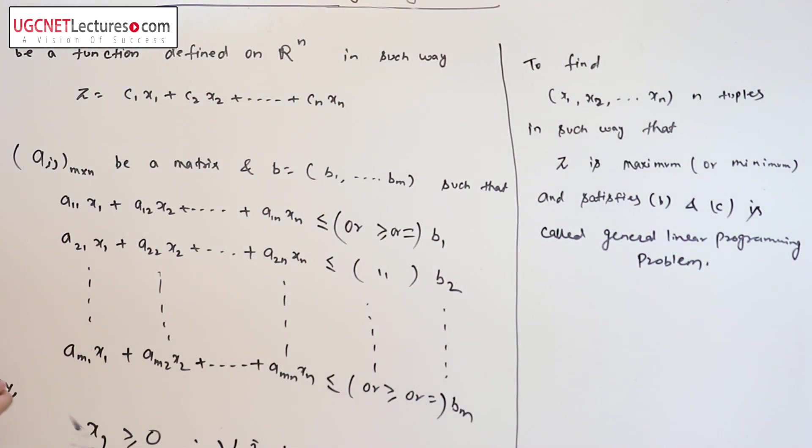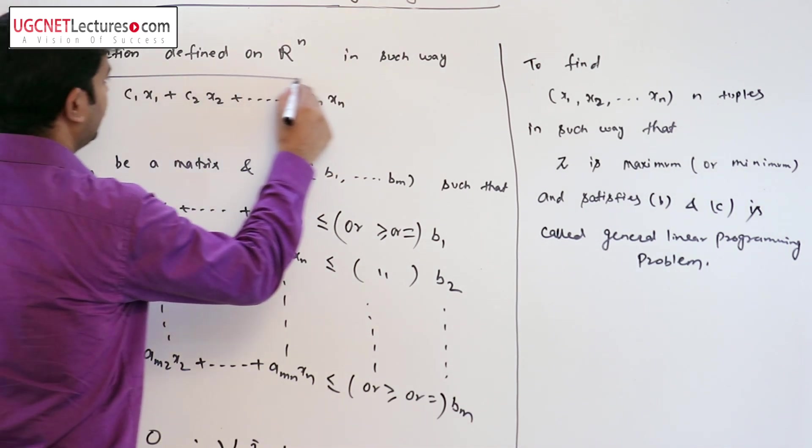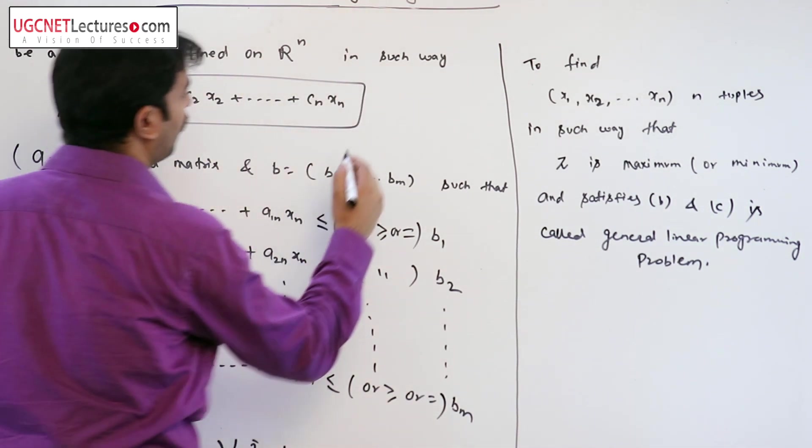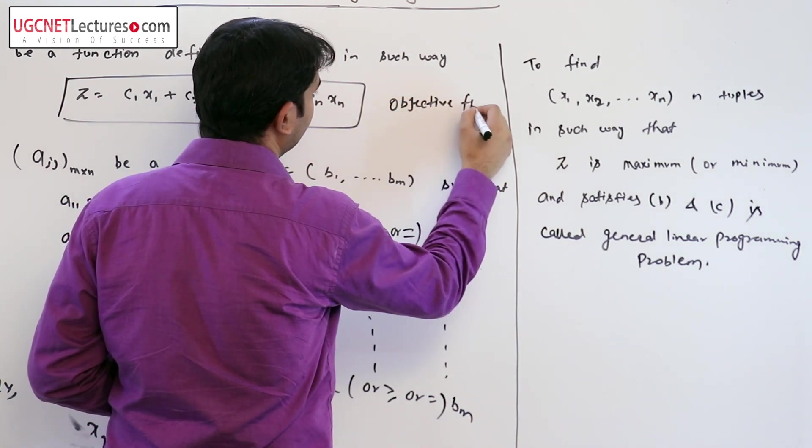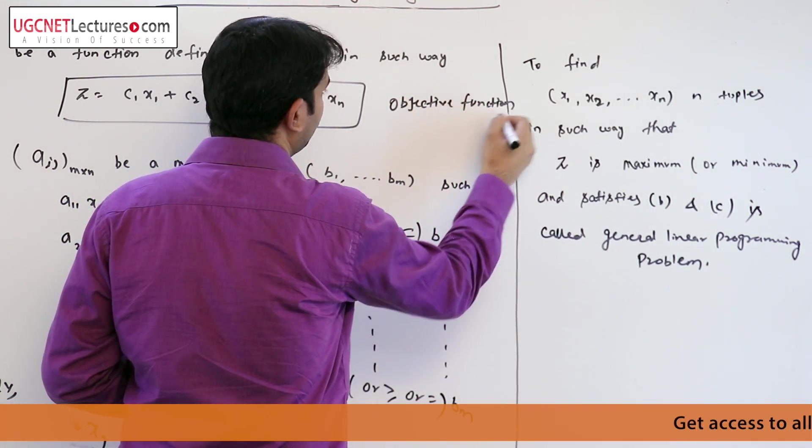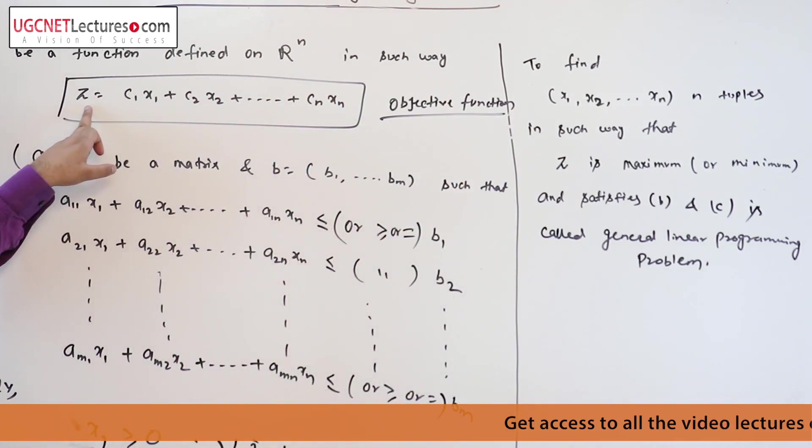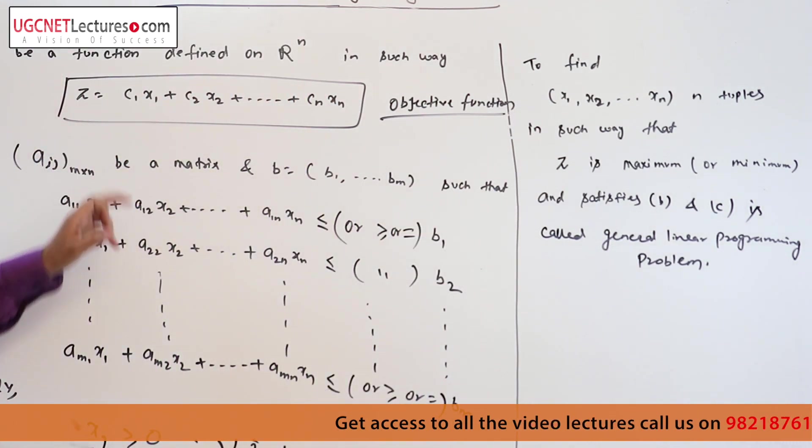Here this z is the goal, we call it objective function, where z is either maximization or minimization.